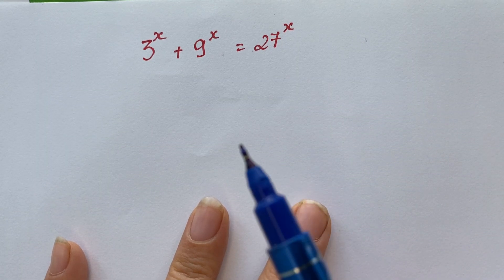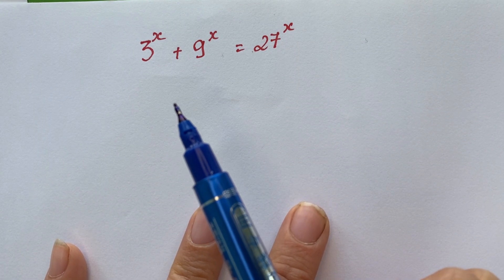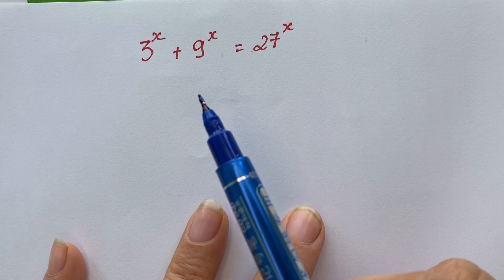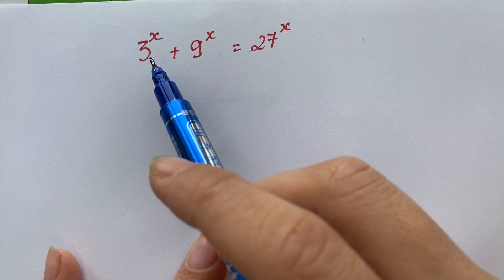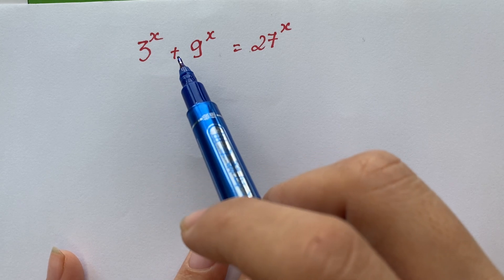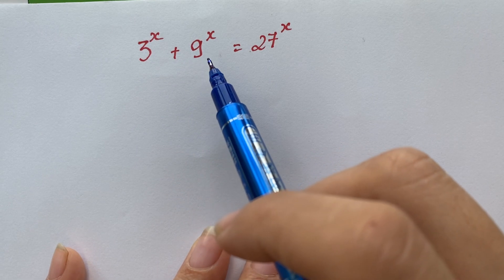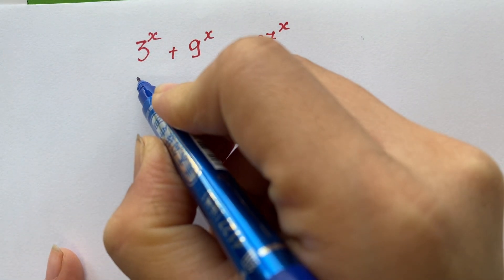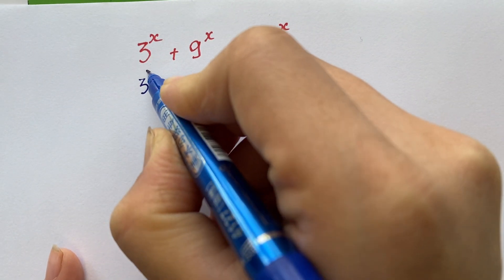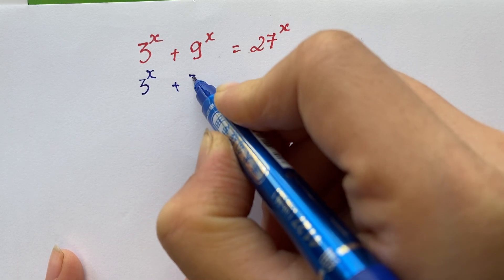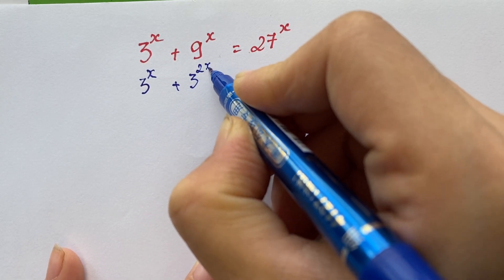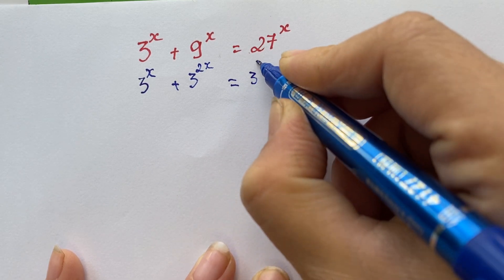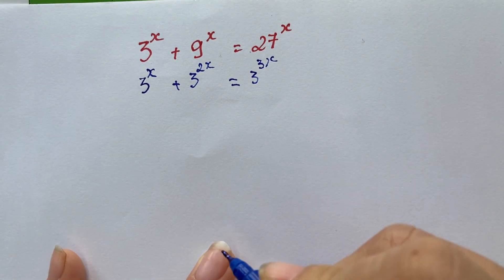Hello everyone! How to solve the Mars Olympias equation here? Everyone see that. In this equation, 3 power x plus 9 power x equals 27 power x. You can rewrite 3 power x plus 3 power 2x, and that equals 3 power 3x.